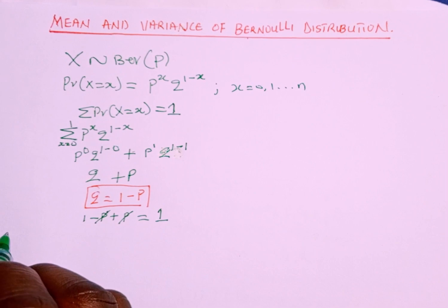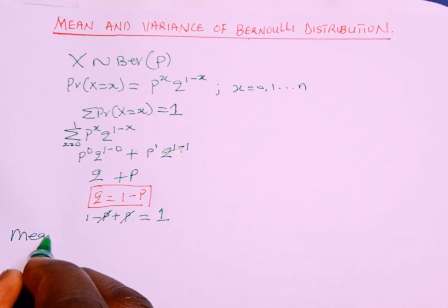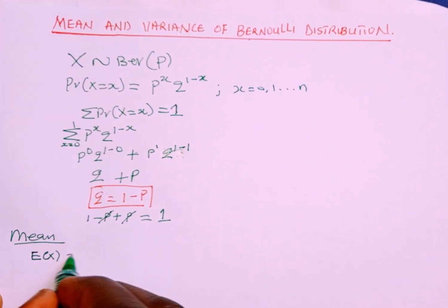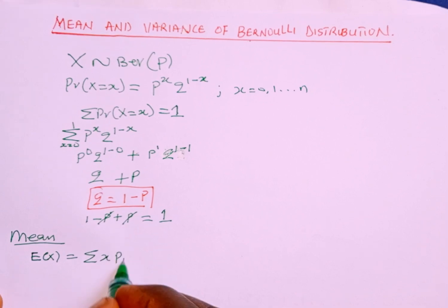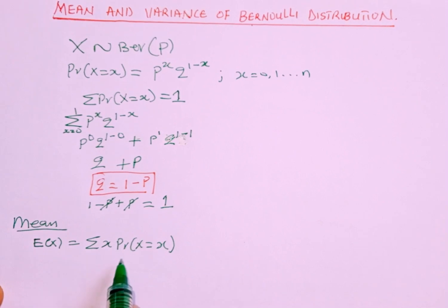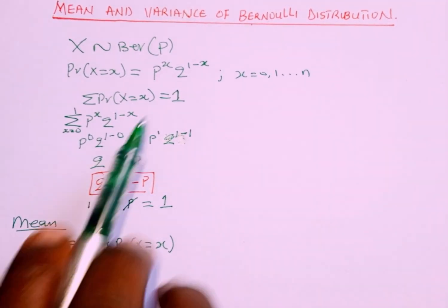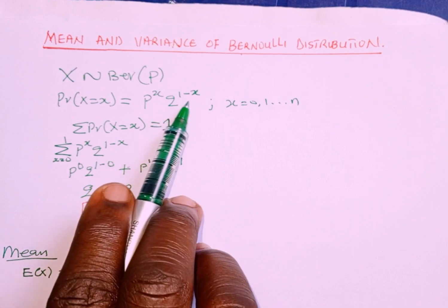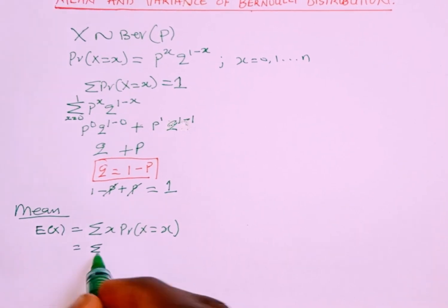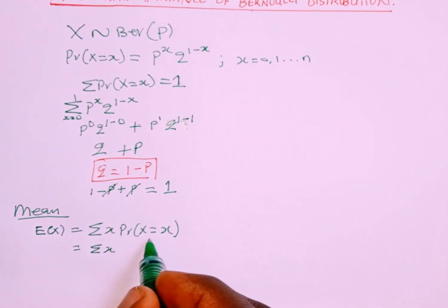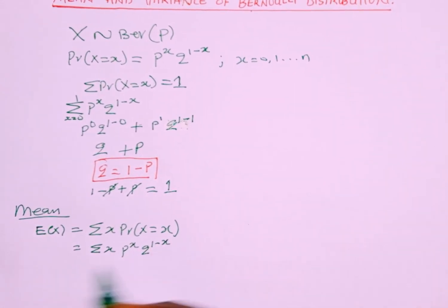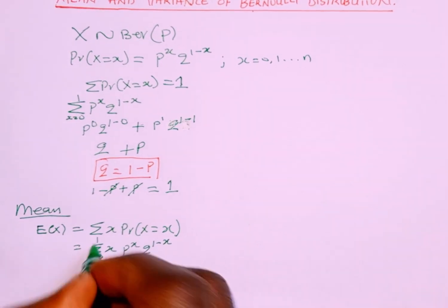Now the next thing is to find the mean. Recall that the mean is the same as the expected value of X, which equals the summation of x times probability of X equals x. We know the Bernoulli PMF is p^x · q^(1−x), so we substitute: summation of x times p^x · q^(1−x), where x goes from 0 to 1.